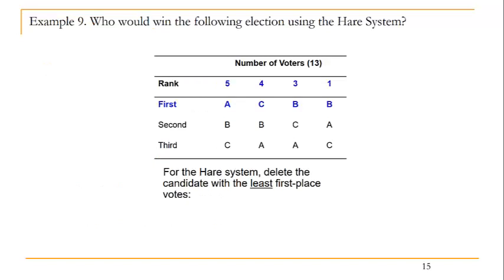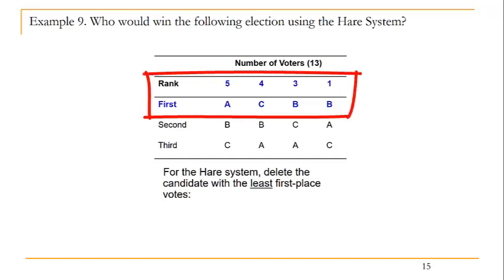Here's an example. We have 13 voters choosing between three candidates, A, B, and C. For the HAIR system, we look at those first place votes and delete the candidate with the least number of first place votes. In this example, candidate A receives five first place votes, candidate B receives four, and candidate C receives four.